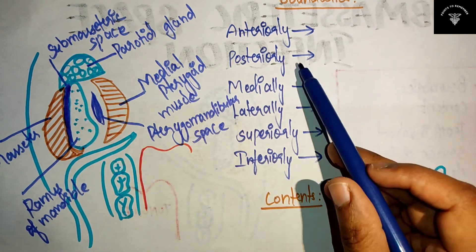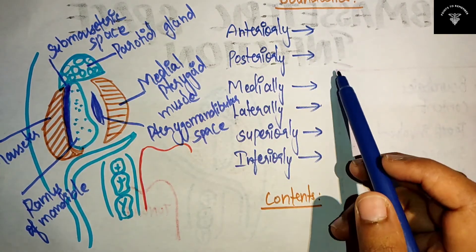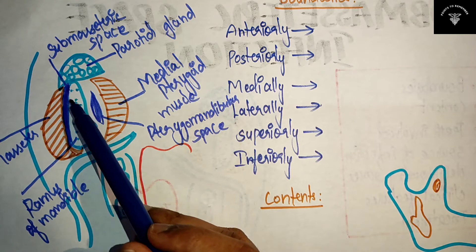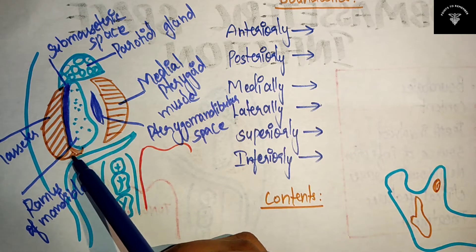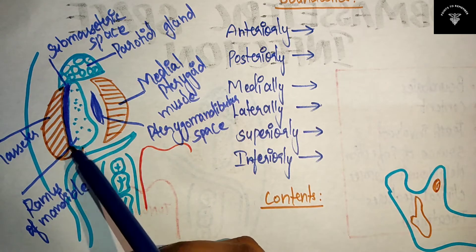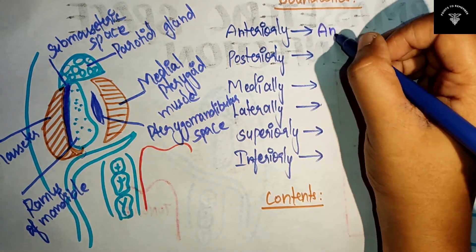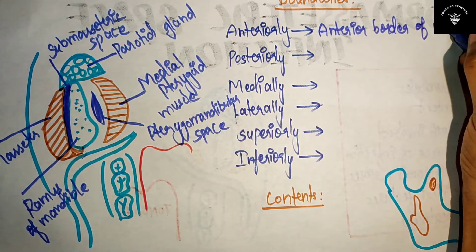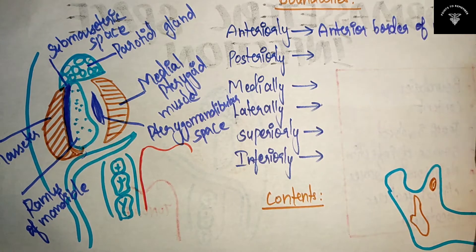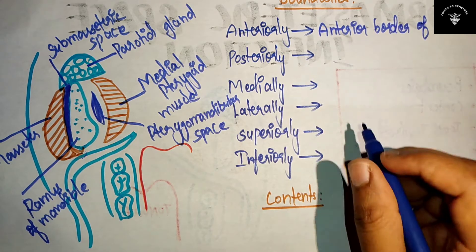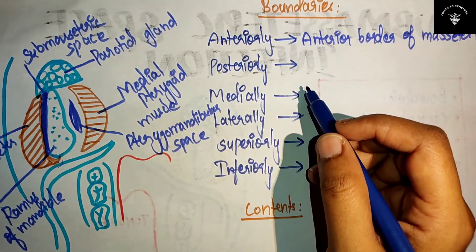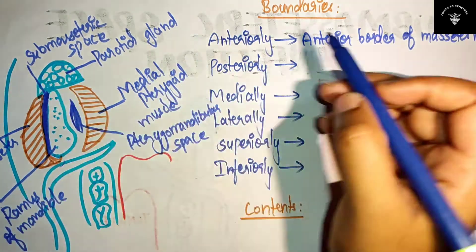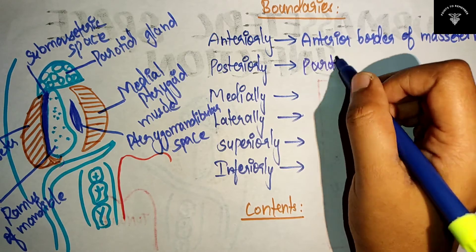Now what do you have anteriorly? Anteriorly you can see the anterior border of the masseter muscle. And posteriorly, you have the parotid gland. Posteriorly will be your parotid gland.